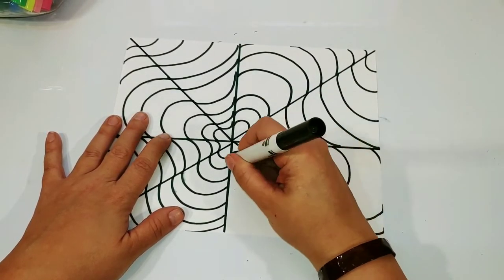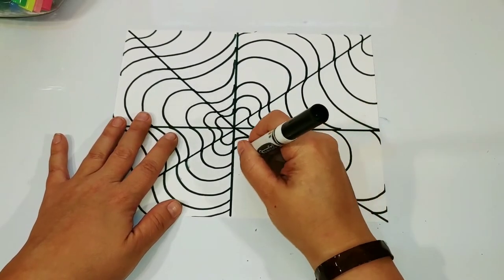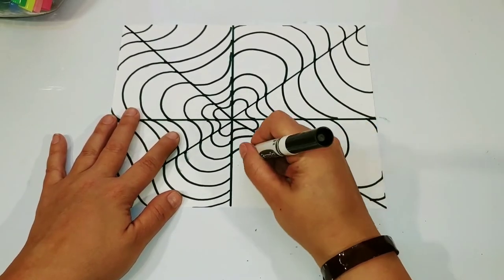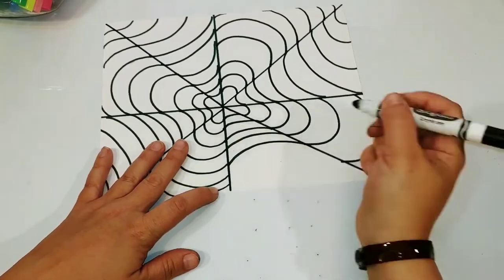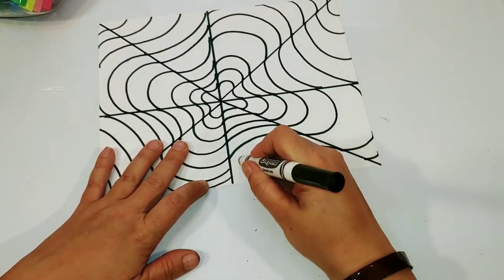We're going to repeat that pattern until our entire paper is full. And as you can see now, we're going to connect our remaining lines to each other so we get one full shape all the way around.